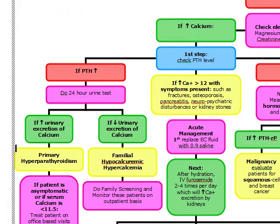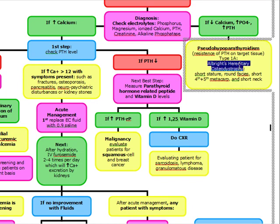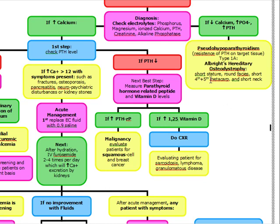A lower-yield topic, but worth covering: if electrolytes show a decrease in calcium, an elevated phosphate, and an elevated PTH, this is pseudo-hypoparathyroidism — a resistance to PTH on target tissue. The most common form is type 1A, which is Albright's hereditary osteodystrophy. These patients present with short stature, round faces, short 4th and 5th metacarpals, and a short neck.